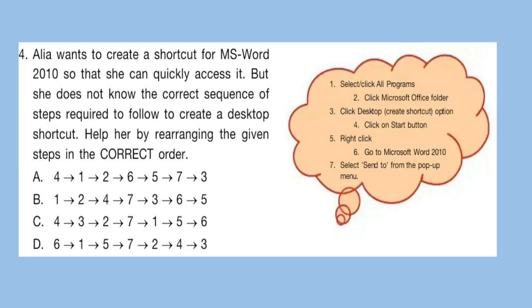Question 4: Alia wants to create a shortcut for MS Word 2010 so that she can quickly access it, but she does not know the correct sequence of steps. Help her by rearranging the given steps in the correct order. The correct answer is option A: First, click on the Start button, then select All Programs, click the Microsoft Office folder, go to Microsoft Word 2010, right-click, select Send To from the pop-up menu, and finally click Desktop — Create Shortcut.